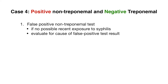This is our final case — case four — using the traditional screen. We have a positive non-treponemal test that reflexes to a treponemal test, but the treponemal test here is found to be negative. Since the non-treponemal test is non-specific and can be falsely positive, given that we only have a positive non-treponemal test and a negative treponemal test, we can consider this a false positive non-treponemal result.